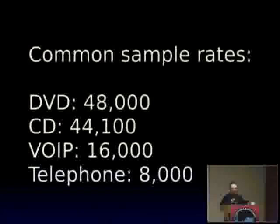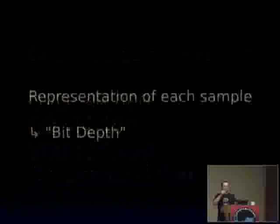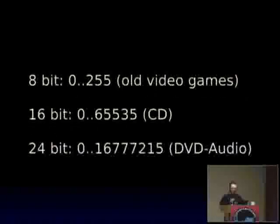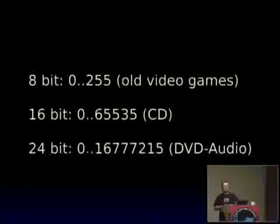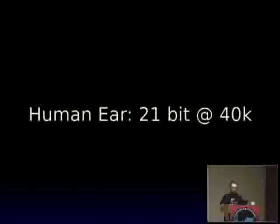Some terminology: samples per second is called sample rate. CDs are 44,100 — that means there are 44,100 individual floating point numbers in every second of sound from a CD. The other thing people talk about is bit depth — this is the representation of the up and down, the granularity of the volume. If you're doing 8-bit, you only have 127 values below zero and 127 above zero. I looked it up — the human ear is about 21-bit at 40,000 samples a second, because humans hear up to about 20,000 Hz, and you need two samples — one for the up and one for the down.